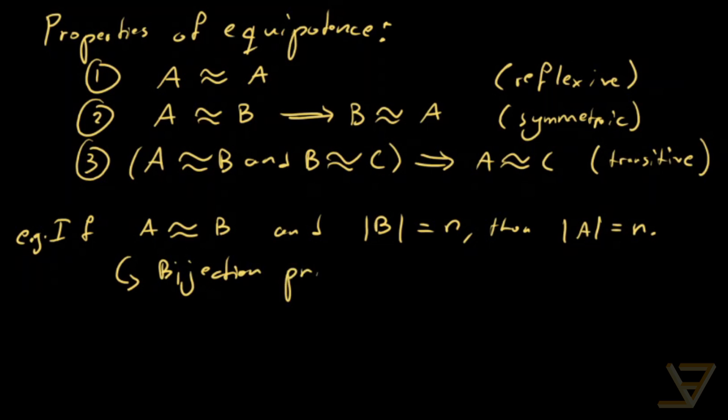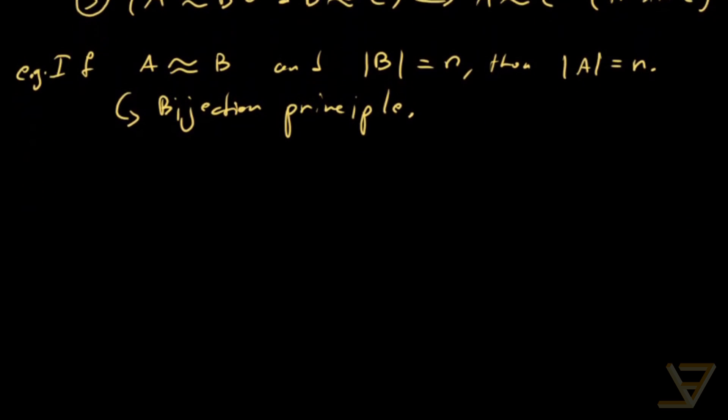And this is one of the most important ideas in all of combinatorics, that you can translate the cardinality of one set into the cardinality of another set. It's extremely important.